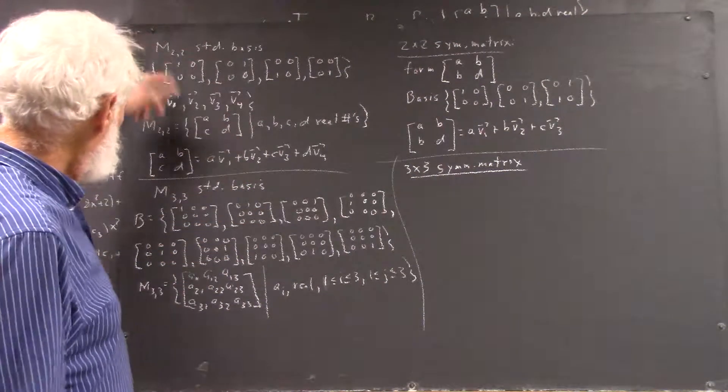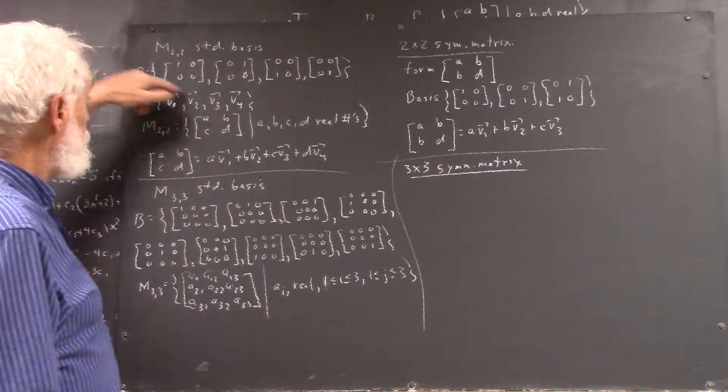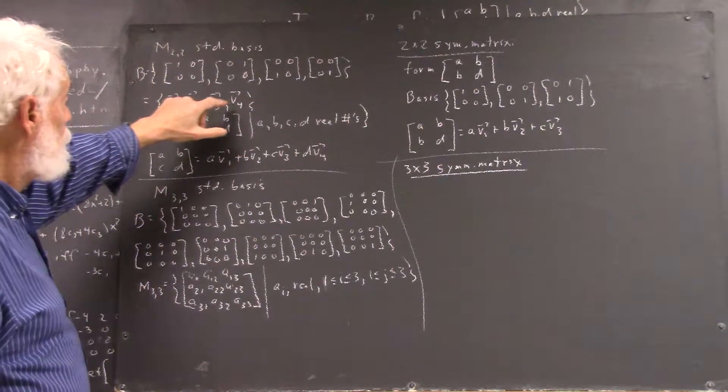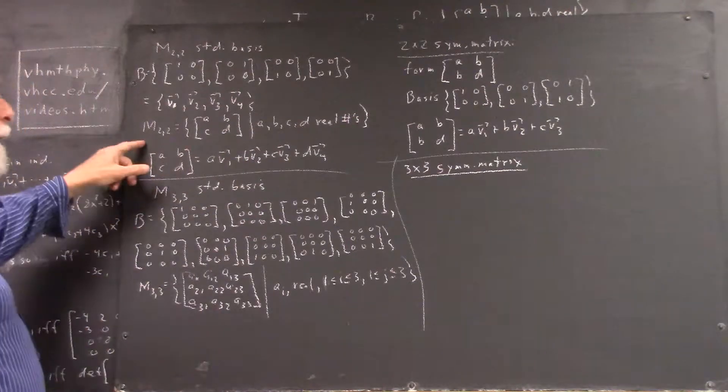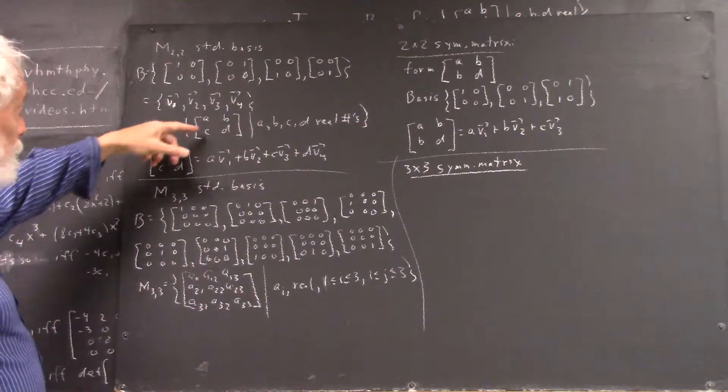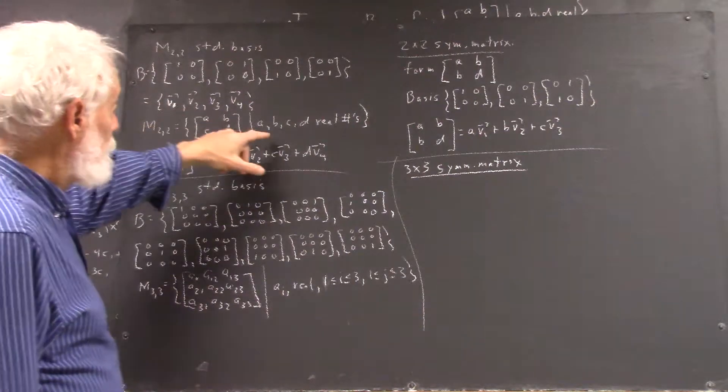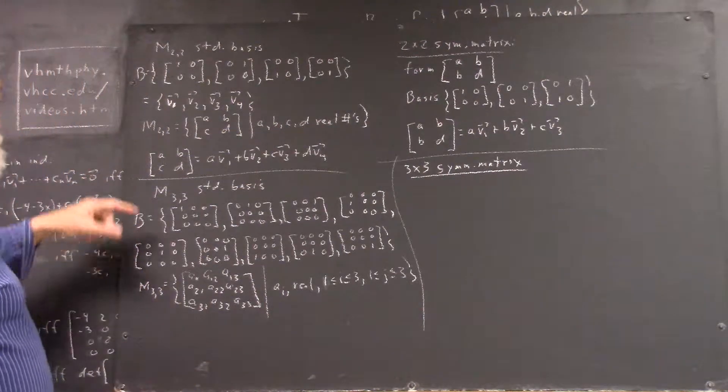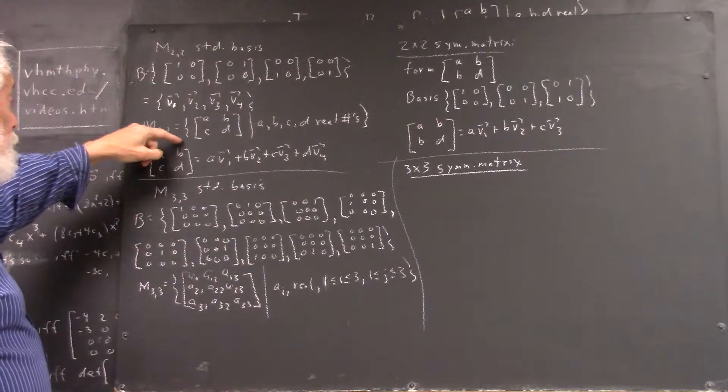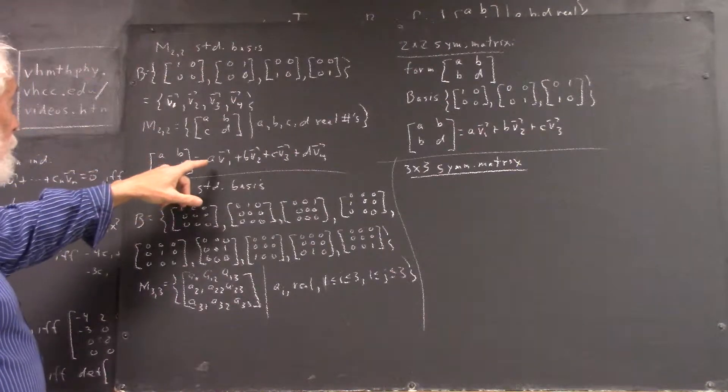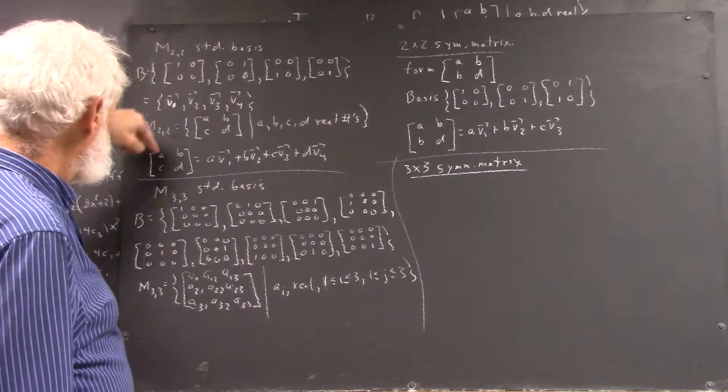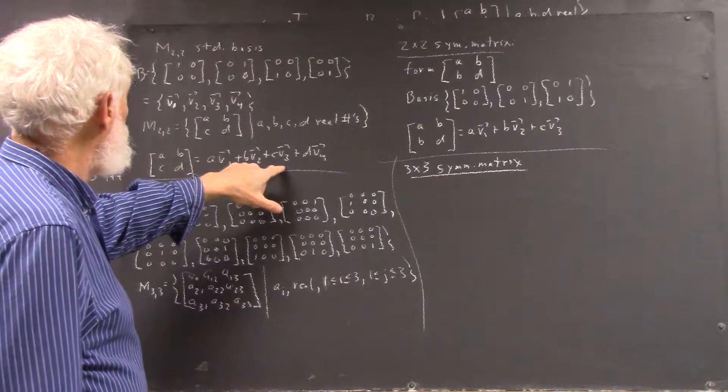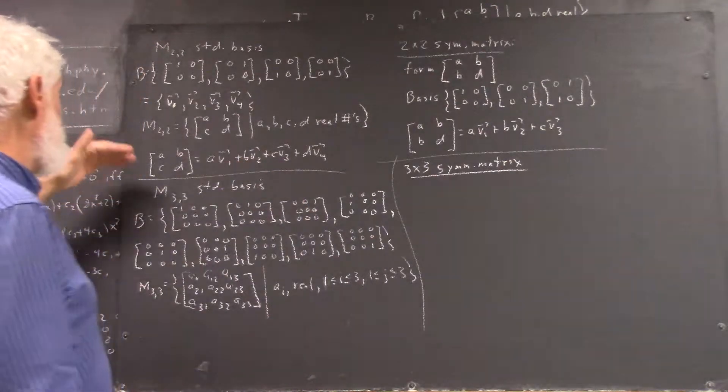Okay, we've seen that the standard basis for M22 is this, and if these vectors are V1, V2, V3, V4, then since M22 consists of all matrices of the form A, B, C, D, where A, B, C, and D are real numbers, then it's easy to get any matrix of that form. You just multiply A times V1, which is A times this, and you'll get the A here, V2 is going to give you the B here, and so forth, and we've seen all that.